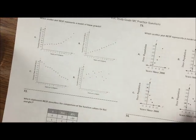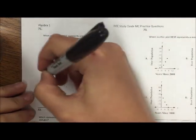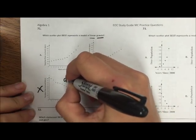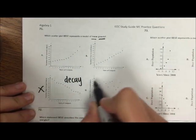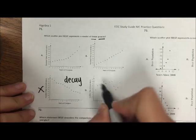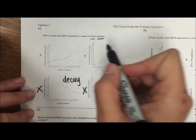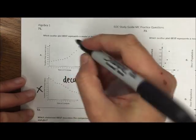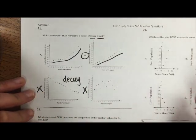Questions 71 through 74. Which scatterplot best represents a model of linear growth? Linear and growth are our two key words. C is not growth — that's decay or decreasing of some kind. D has no correlation. So between A and B, which one's more linear? B is way more linear than A. A is more exponential and B is more linear.